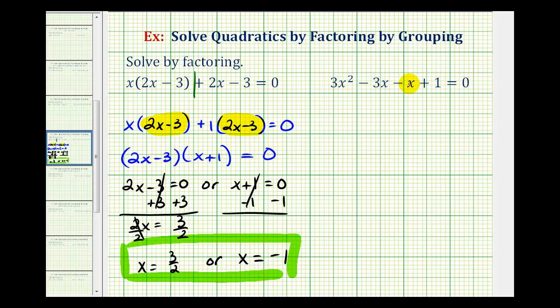Looking at our second example, again we could combine these two like terms and then factor this another way, but again we are going to review the factor by grouping method. So we'll start by dividing this in half and then we'll factor the left side and right side separately in hopes of having a common binomial factor as we did here on the left.